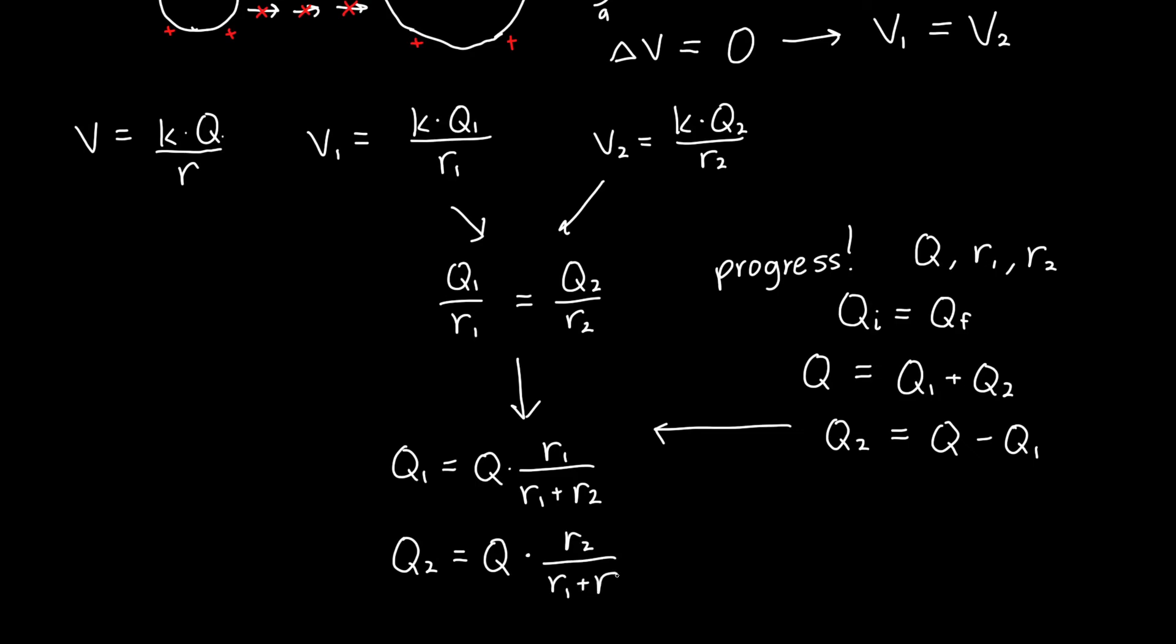This is an interesting result. This says that the amount of charge each sphere gets is proportional to its radius divided by the total radius. That's sort of unexpected. I would have expected the charge to distribute itself proportional to the area, but it turns out that's not the case. The reason is that what has to be the same between the two spheres is their potential, their electric potential. That's because the system is in equilibrium, so there's no electric field pointing from one to the other.